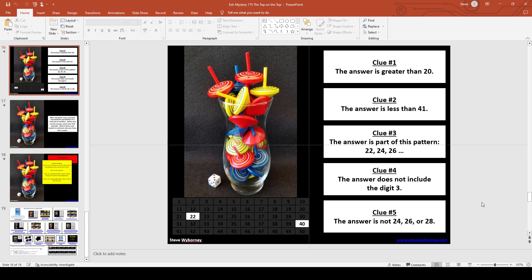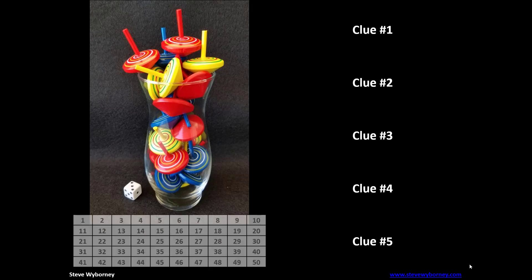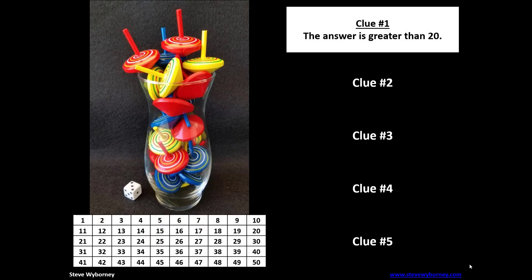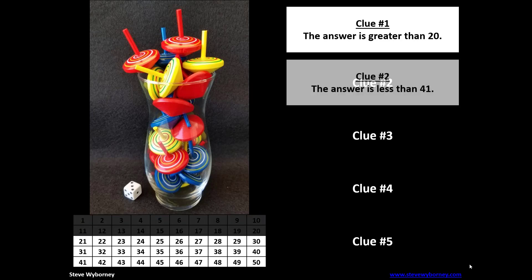I think it's also helpful to preview the Estimistry by playing the slide. Clue 1: the answer is greater than 20, so I know that any of these numbers are going to be eliminated. Clue 2: the answer is less than 41, so I know that any of these numbers are going to be eliminated.